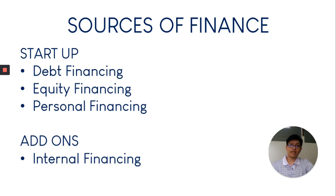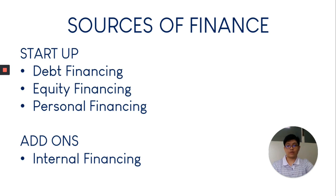Another source of finance is internal financing. This is when you've already established your business. Internal finance refers to the profits yielded from operations — your profits and retained earnings. Retained earnings are funds that are not currently being used. They are reserved because we already have our working capital fixed and have no other investments to finance, until a new one arises. That is why we reserve internal financing for our investments.